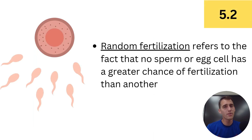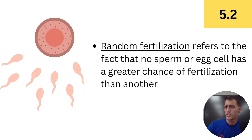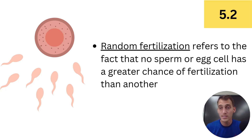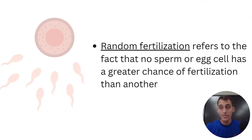That last piece is random fertilization, and this one's the easiest to explain. Which sperm and which egg become the two that will fertilize and become the offspring for the next generation is random. There's no greater chance of one sperm cell fusing with the egg over another, and no one egg has a greater chance than another. So that makes it completely random — there's no bias, no favoritism. It's completely random, and that increases the variation as well.